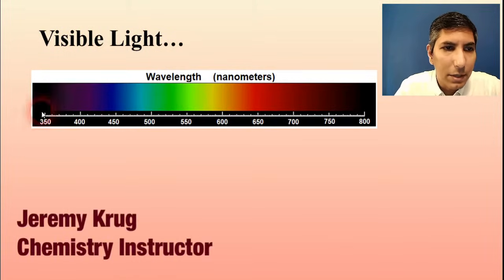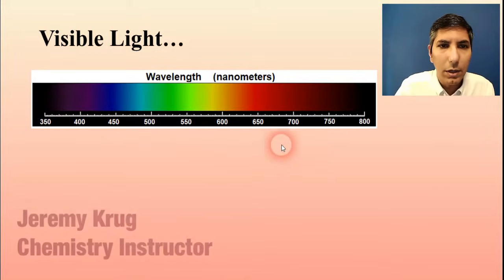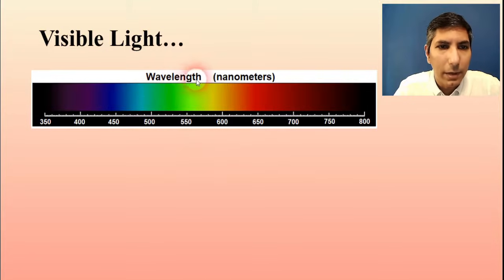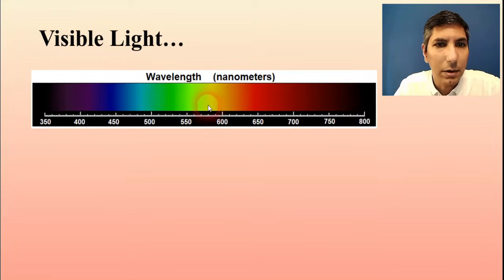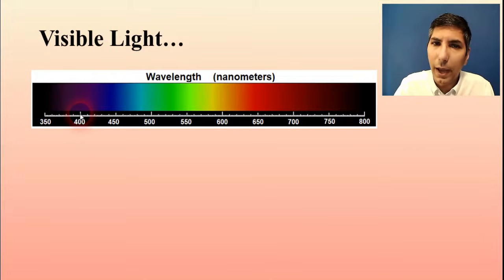You may have seen this graphic or something similar to it before. This is essentially the visible light spectrum in terms of the wavelength in nanometers. So if you see green light, just as an example, what you're seeing is light that has a wavelength of somewhere around 525 nanometers. When you're seeing yellow light, you're seeing visible light at a wavelength of somewhere around 580 nanometers. If you see violet or purple light, it has about 400 nanometers as its wavelength. Every color of light corresponds to a specific wavelength, and we can actually measure that using instruments.